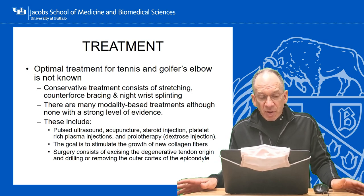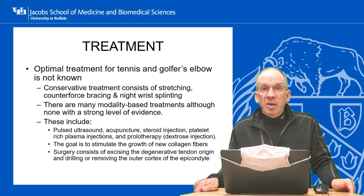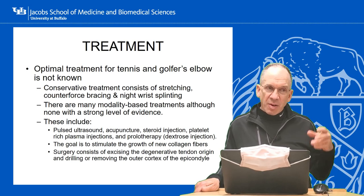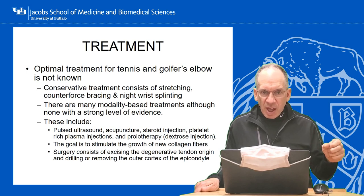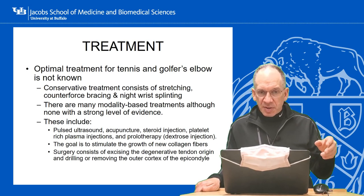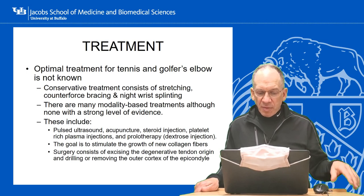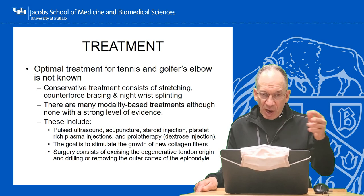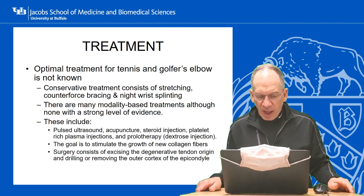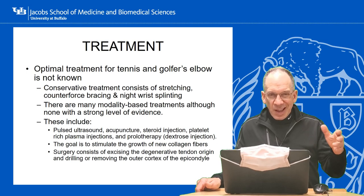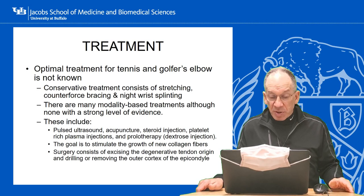Modality-based treatments — none of which have strong evidence — include pulsed ultrasound, acupuncture, steroid injections, platelet-rich plasma injections, and prolotherapy. The theory behind PRP and prolotherapy is to stimulate an inflammatory response so fibroblasts come into the area and lay down better collagen. Even surgery involves excising the diseased tendon origin and promoting better collagen growth — in some cases drilling or removing the outer cortex of the bone, although that last part is controversial and not widely done anymore.